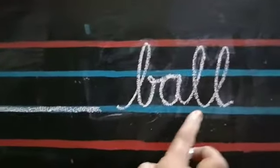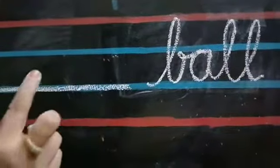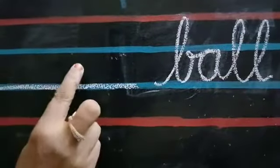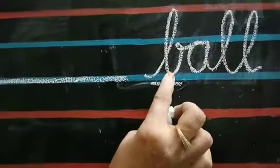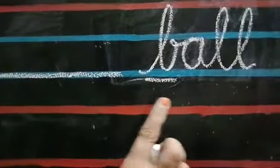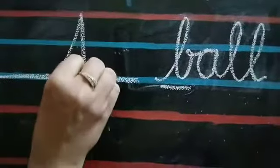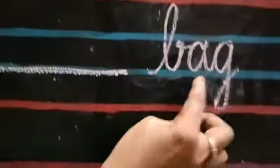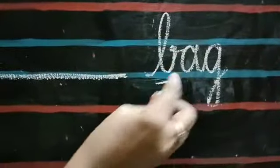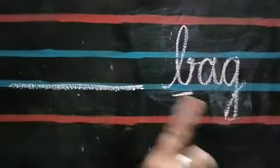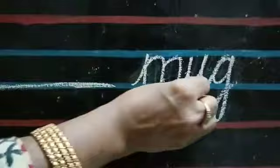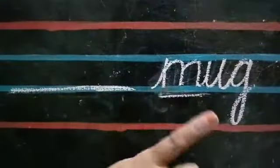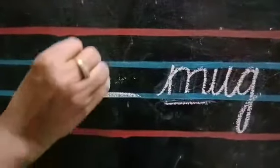B, A, L, L — BALL. What should I write here? A or AN? Check the first letter of the word — B. Is B a vowel? No. So, write only A. Next, B, A, G — BAD. Check the first letter, children. Is B a vowel? No. So, write A. A, BAD. M, U, G — MUG. Check the first letter, children. Is M a vowel? No. So, write A, MUG.